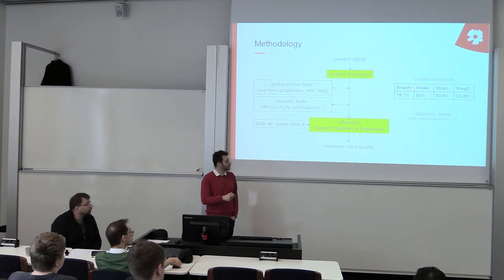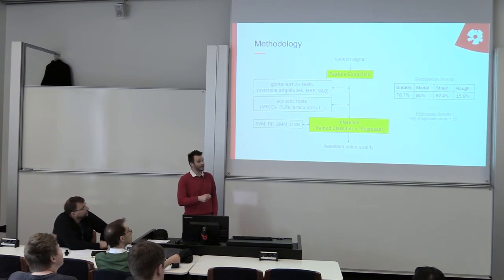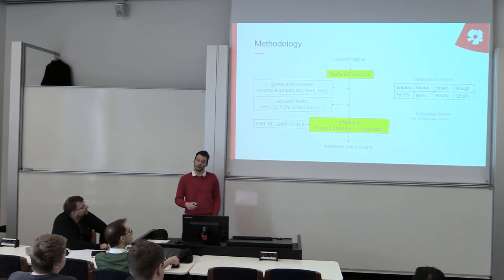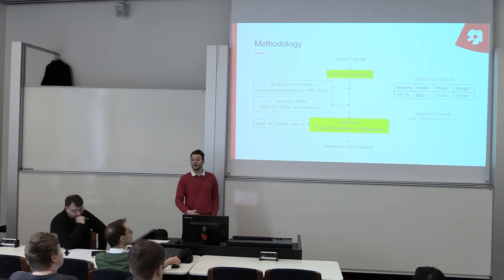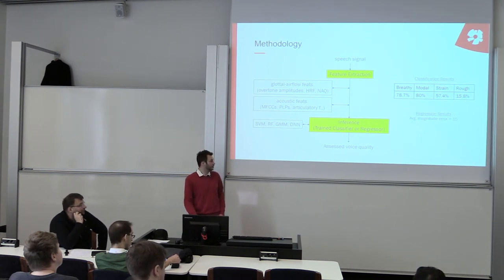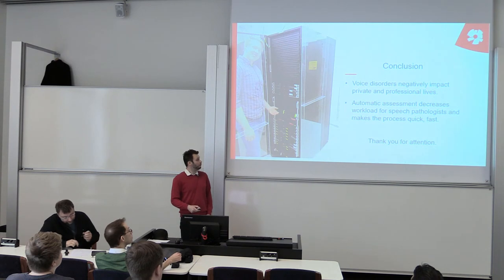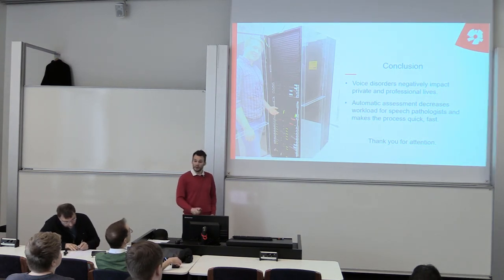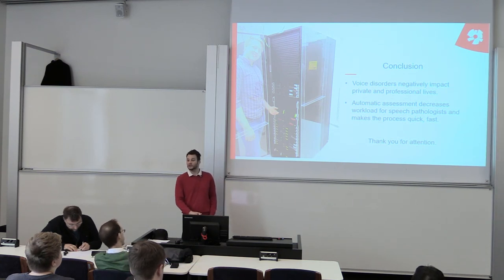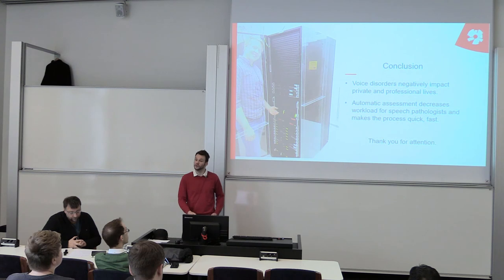As for our current performance: we are performing quite well in classification of breathy versus modal voice, somewhat well in detecting strain in the voice, and fairly poorly at detecting rough voice. As for the regression scores, in terms of a 0 to 100 scale the average error is about 15 points — so if a person should be graded at 30, we are roughly plus or minus 15 around that. In conclusion, voice quality assessment using machines has great potential for the future, since it would make the task easier for speech pathologists — they would not have to grade everything and could focus more on actual treatment.